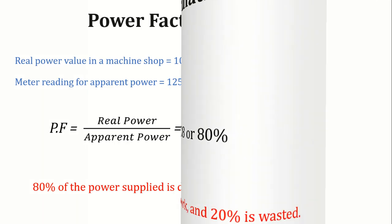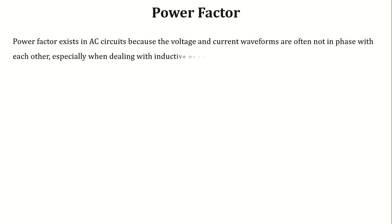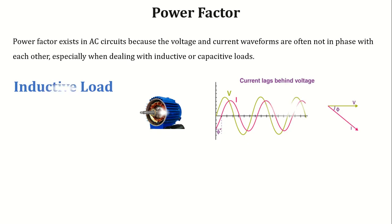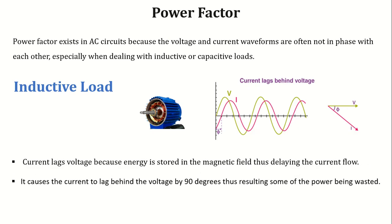You may have a question in your mind: why does power factor exist in an electrical system? Actually, power factor exists in AC circuits because the voltage and current waveforms are often not in phase with each other, especially when dealing with inductive or capacitive loads. In inductive loads like motors, current lags voltage because energy is stored in the magnetic field. Power factor is always less than 1 in inductive loads.